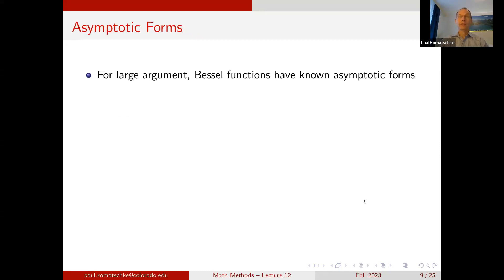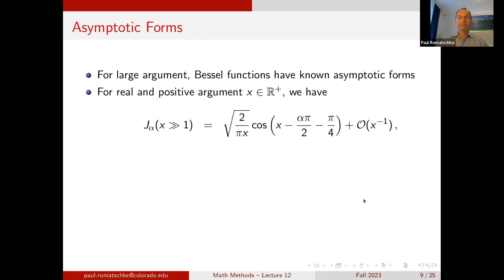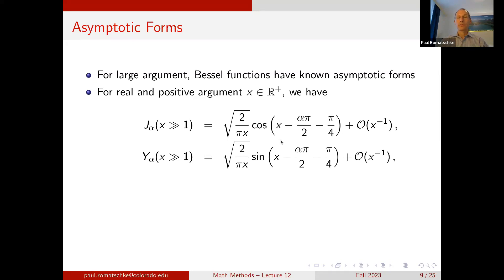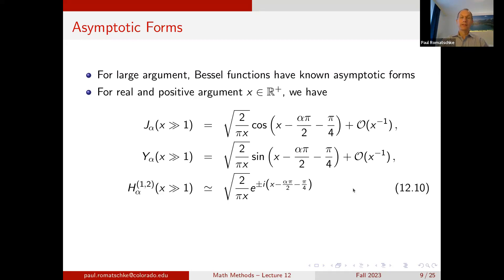For large arguments the Bessel functions have known asymptotic forms. For real and positive argument, the Bessel function of the first kind is given as a cosine with a shifted argument and a factor of 1/√x — essentially the damped cosine form discussed earlier — and Y is a damped sine function. The Hankel functions for large argument are given as damped exponentials of ±ix with a shifted argument and damping coefficient 1/√x.